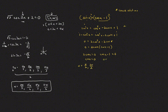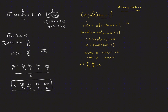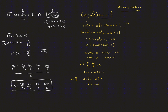Bringing everything to one side gives 2 cosine squared x minus 2 cosine x equals 0. Factoring out 2 cosine x leaves cosine x minus 1. Setting each factor to zero: from cosine x equals 0, we get pi over 2 and 3 pi over 2. From cosine x equals 1, we get x equals 0. Now we must check these in the original equation sine x equals cosine x minus 1. Plugging in pi over 2: sine(pi/2) equals 1, but cosine(pi/2) minus 1 equals negative 1 — not equal, so pi over 2 is extraneous.